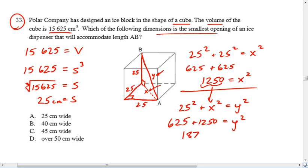Add those up, we get 1875 is equal to Y squared. And so we take the square root of both sides to get Y is equal to the square root of 1875. And if you do that on your calculator, that should give you 43.3 something. And then looking at our possible choices here, the answer that is just larger than 43.3 centimeters is 45 centimeters. So the answer on this one is C.